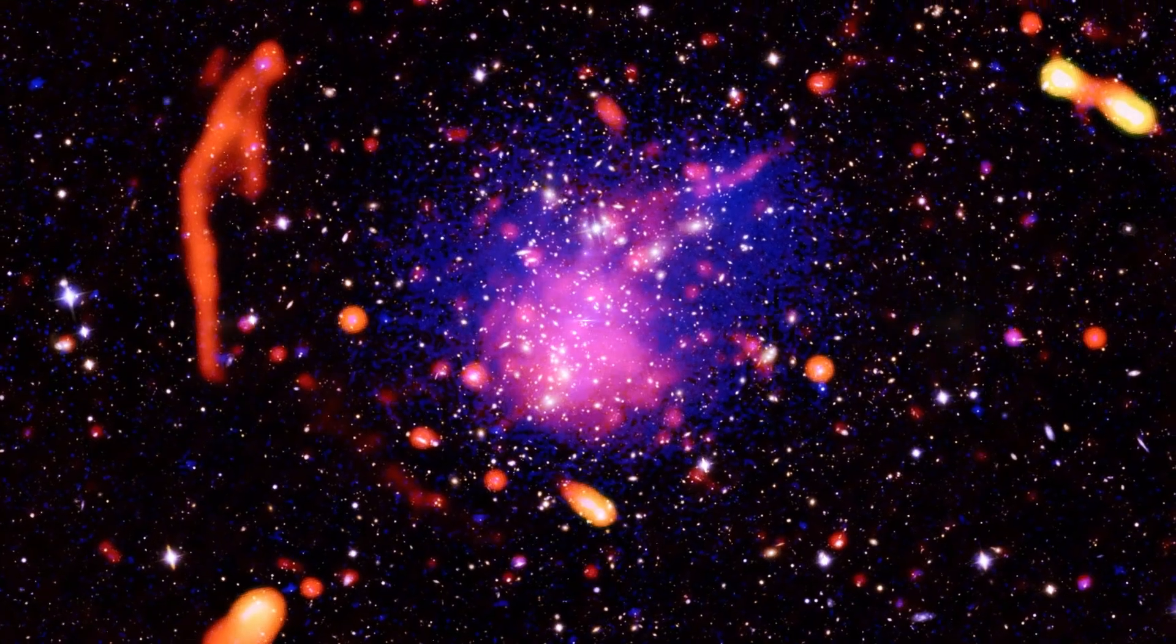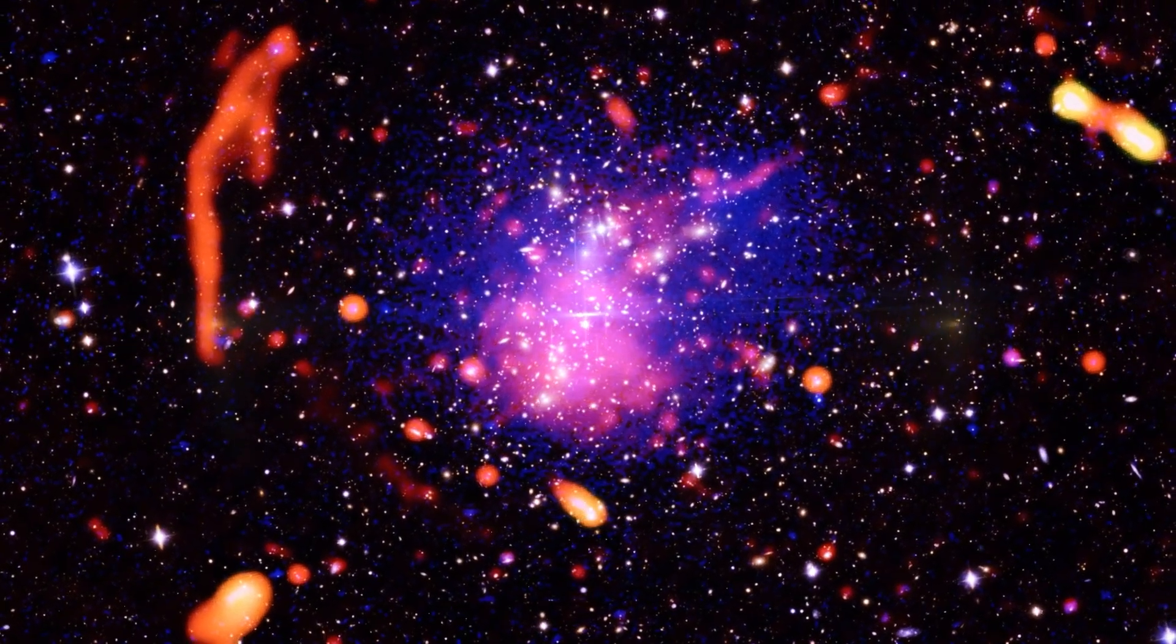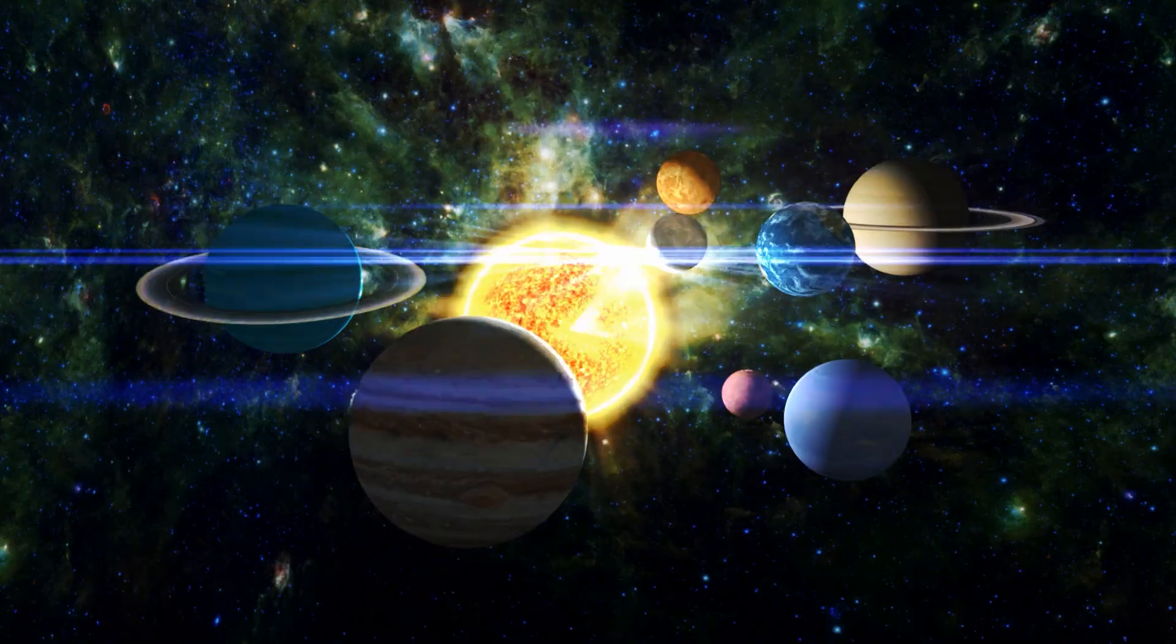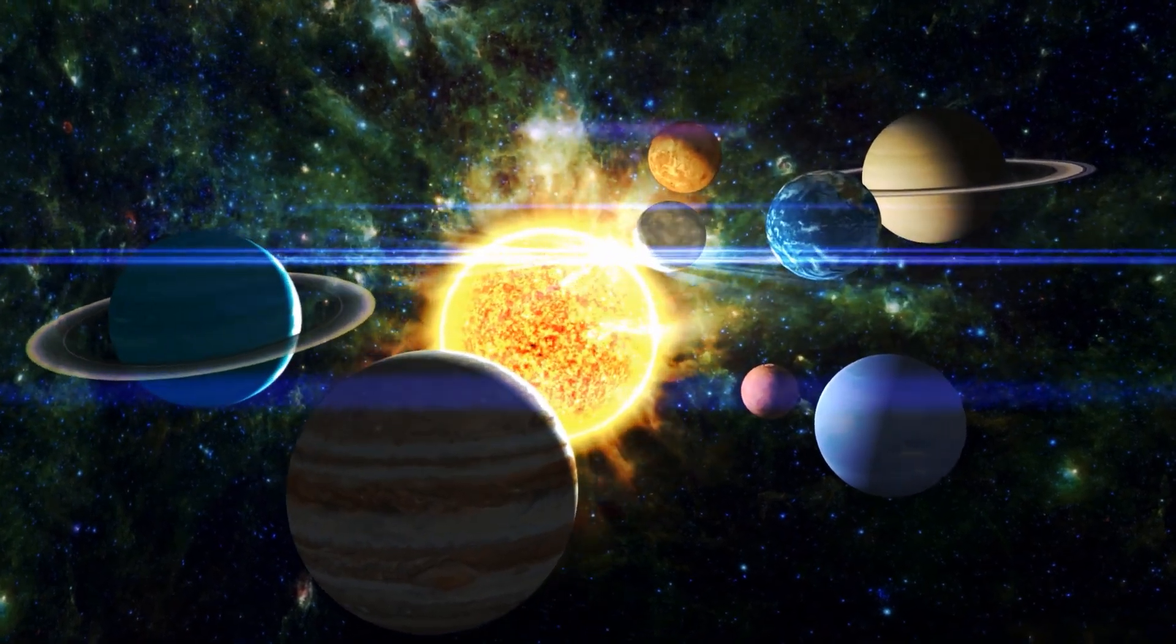It looks like a scatter of jewels on black velvet. But each point of light, each smudge, is an entire galaxy, home to hundreds of billions of stars and planets.